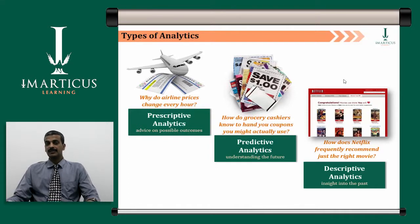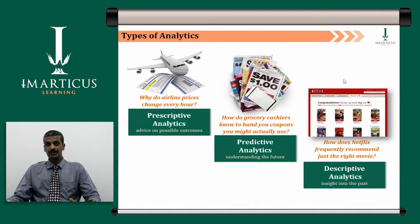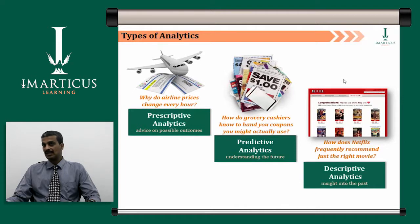For descriptive analytics, consider how Netflix frequently recommends just the right movie. Based on your download pattern and the movies you have watched in the past, the platform understands the category of movies you watch and suggests movies you haven't downloaded or seen yet, pushing you to download those particular movies. Here they use descriptive analytics to understand past patterns and suggest movies that fall within your category of choice.